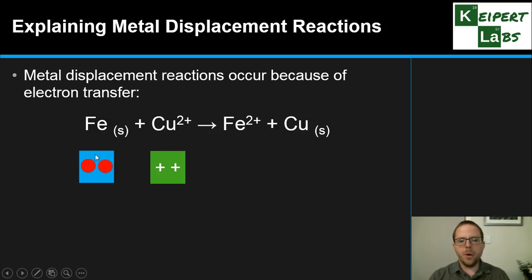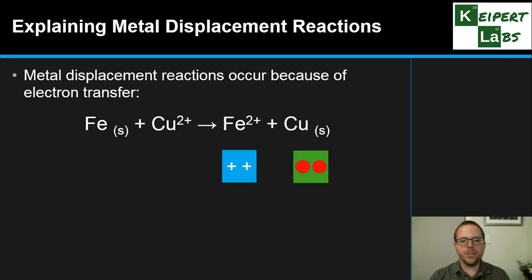So what I'm visualizing: the blue box is the iron, the green box is the copper - the copper with its two pluses and then iron, these are representing two electrons that this iron atom holds. As these two species are allowed to interact with each other, then those two electrons from that iron atom transfer across to the copper. So now we're left with iron 2+ and we have copper as a neutral solid, a neutral atom that forms a solid.